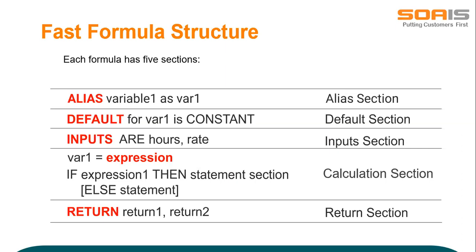Alias: database items are named by the system when it creates them, and sometimes these names are too long to conveniently use in a formula. You cannot shorten the name of the database item itself, but you can set an alternative shorter name to use within the formula. Default section: use the default statement to set a default value for an input value or a database item. The formula uses the default value if the database item is empty or no input value is provided when you run the formula. For example, if we are setting a default value as 3 and the database value is empty, then the return value based on formula calculation will populate the default value of 3.